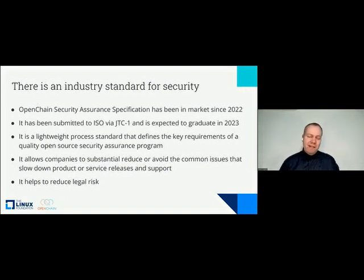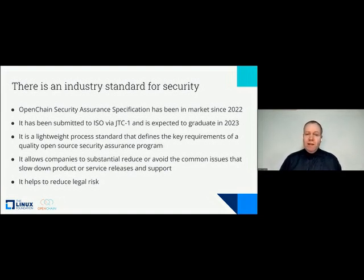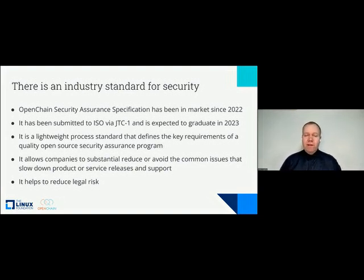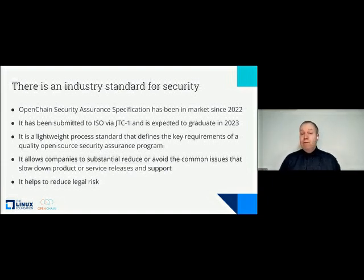The second standard we maintain is a sister security standard. It's been in market since last year — we started working on it in 2021 — and it's already been submitted to ISO via JTC1 on a fast track, so it's expected to become an ISO standard next year. It defines the key requirements of a quality open source security assurance program in around seven pages.